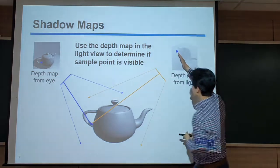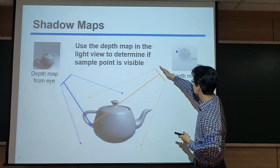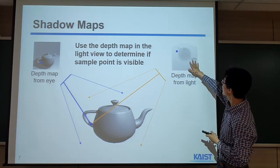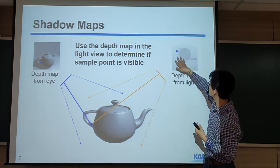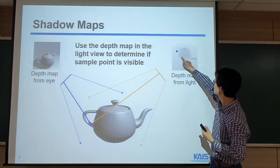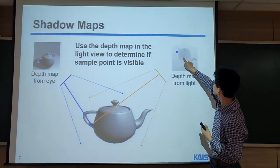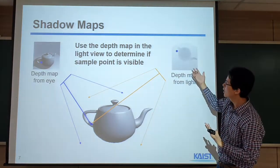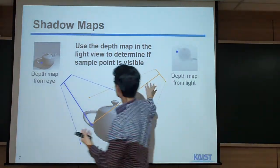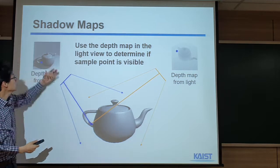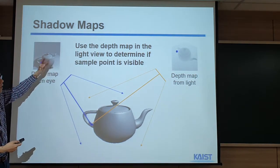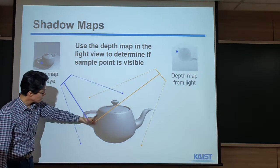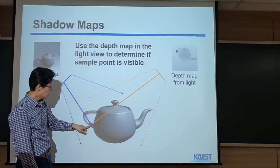We rasterize the triangle from the light source's perspective and get this kind of depth map from the light source. This means the light can see this region. This pixel, within this region of the scene, can receive the light source. Then we rasterize the scene again from our viewpoint. There, we utilize this information.